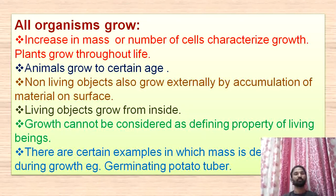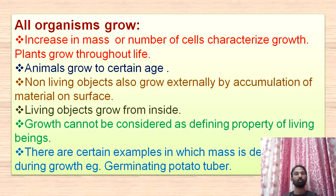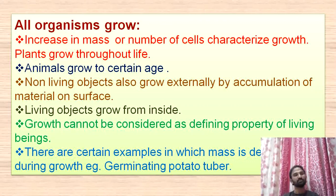Although all organisms grow, based on the cell number, organisms are mainly divided into two types: unicellular organisms and multicellular organisms. Unicellular organisms have only a single cell; multicellular organisms have many cells which form tissues, and those tissues form organs. Increase in mass or number of cells is growth. Plants grow throughout their life — if you sow a seed into the soil, after a few days it becomes a seedling and grows as a plant.